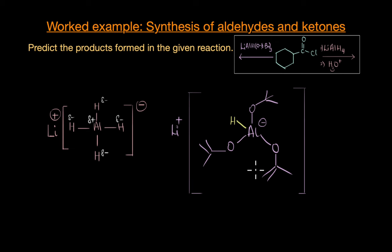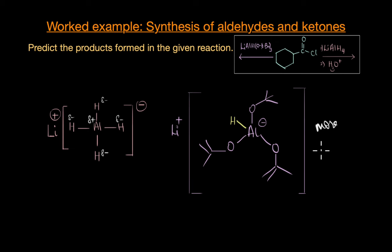So now we not only have a sterically hindered nucleophile, but also a less reactive nucleophile, as electron density is lesser compared to lithium aluminium hydride. Because of these factors, the hydride ion in lithium tri-tert-butoxyaluminium hydride is much less reactive — in other words, a lot more selective. So what does this selectivity mean in our reaction?